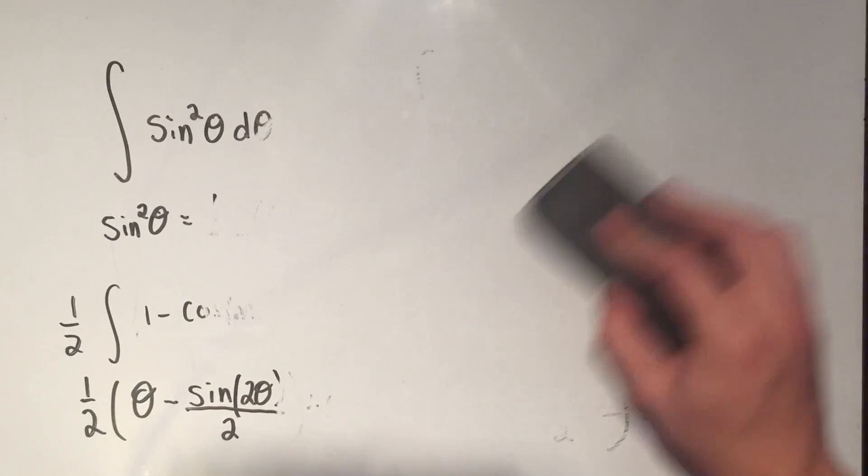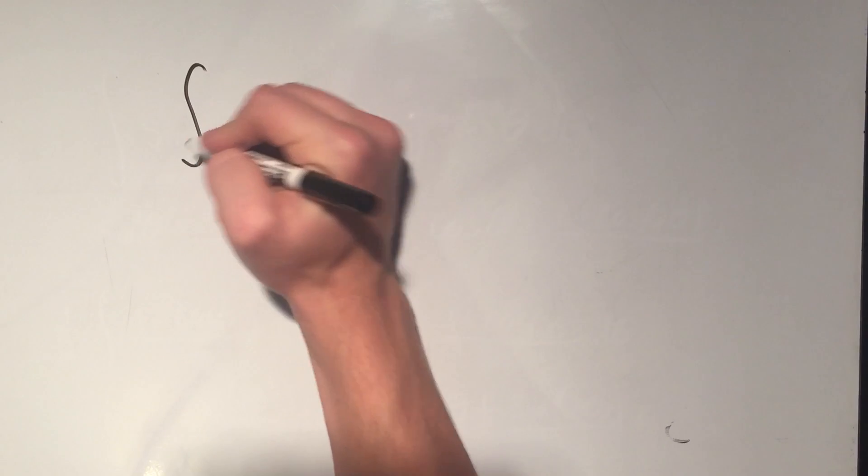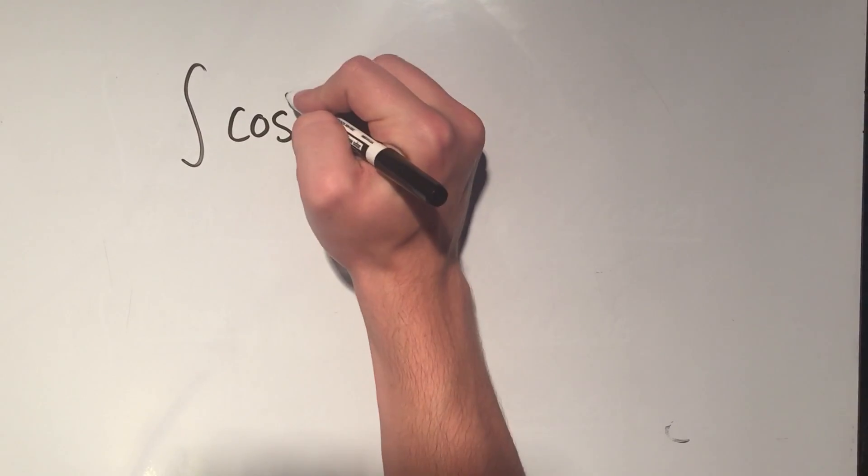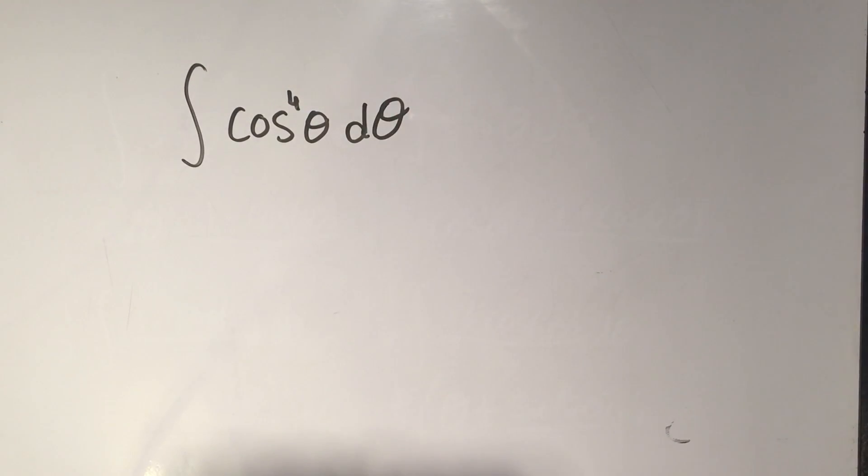So let's do just a harder problem. Similar, but harder. So let's do the integral of cosine to the fourth theta d theta.